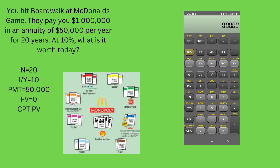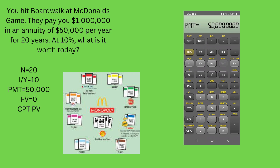On the TI BA II Plus, we're going to figure this out. You've got N = 20, I/Y = 10. Present value is what we're trying to figure out. The payment is a positive $50,000 because this is a cash inflow, so we don't need to make it negative. Zero is your future value, because in 20 years this annuity will be worth zero — it will be fully paid out. Then we go compute present value.